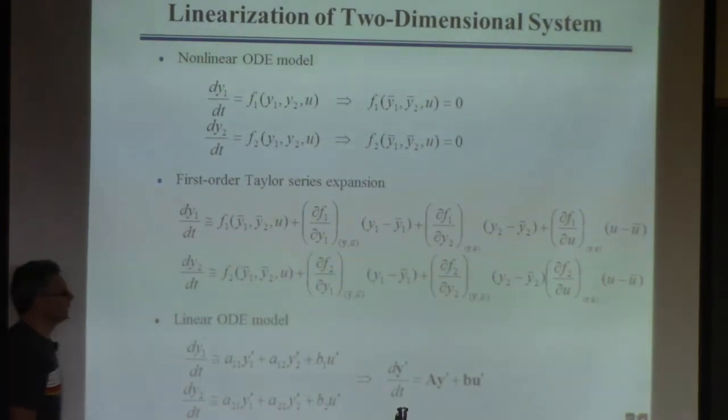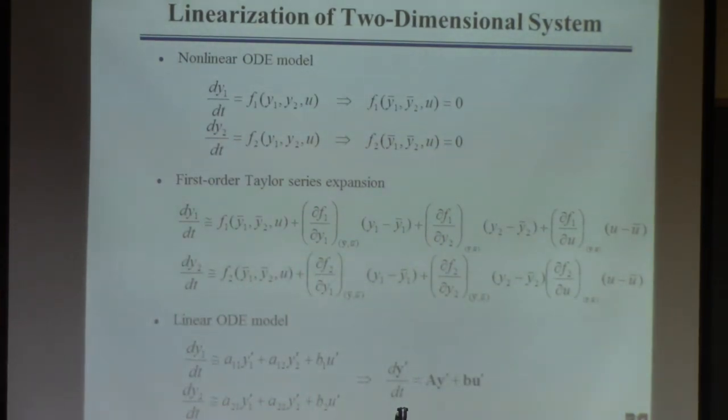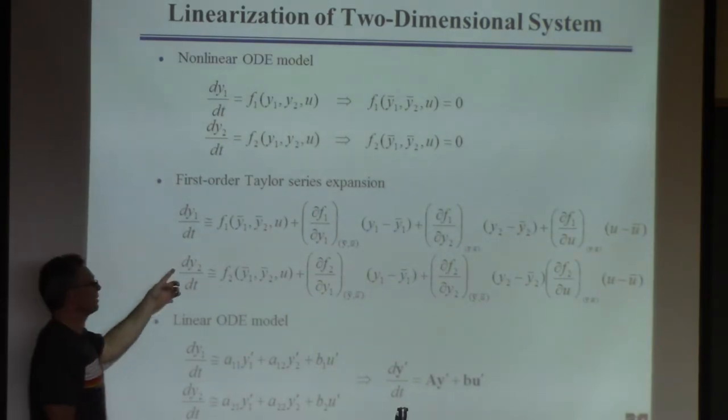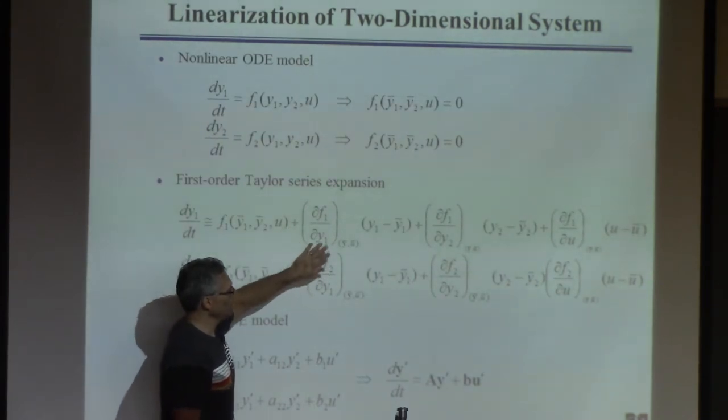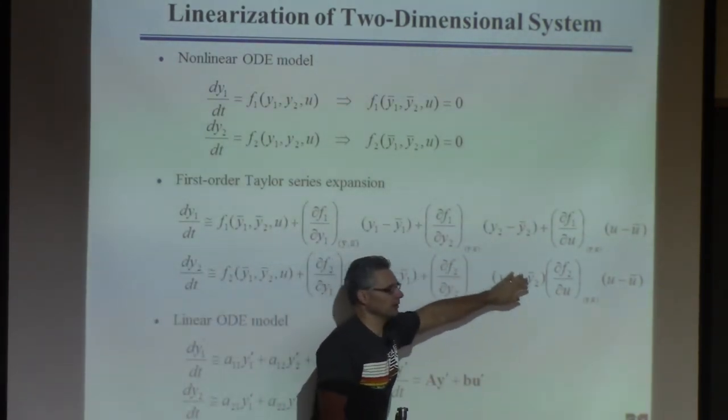It's just more of the same. It's nothing new. Then you've got to do it for another equation, though. So you've got two equations, and then you've got to do the same thing for the second equation. Evaluate it at the steady state, zero. Have a derivative with respect to y1, have a derivative with respect to y2, and have a derivative with respect to u.